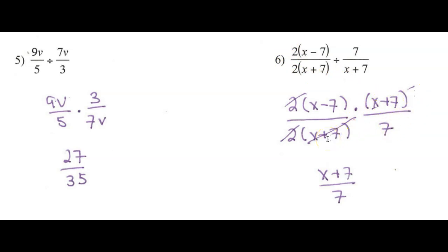And I can cancel some x plus 7s. I can cancel the 2s. I'm going to be left with x minus 7 in the numerator and 7 in the denominator.